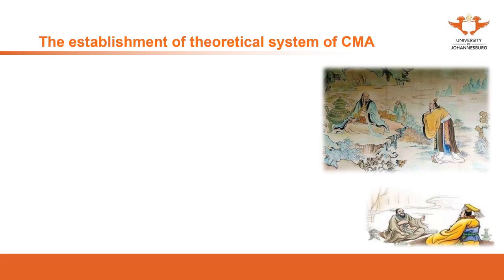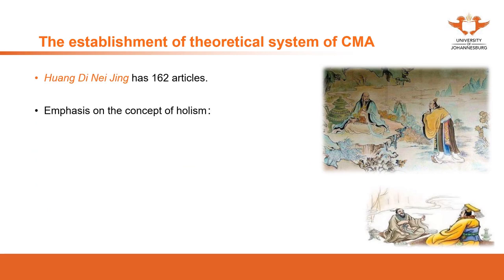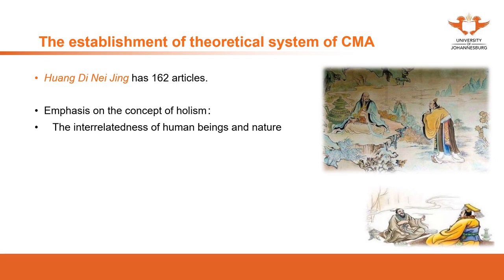The first classic we're going to introduce is the Huangdi Neijing. The Huangdi Neijing has 162 articles. It proposes an emphasis on the concept of Holism. We will have a specific discussion on Holism in future videos. Here we give a brief introduction. Firstly, it emphasizes the relationship between human beings and nature, which aligns with the idea that Chinese medicine is related to astronomy, meteorology, and nature.